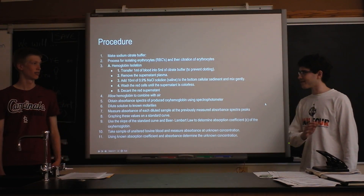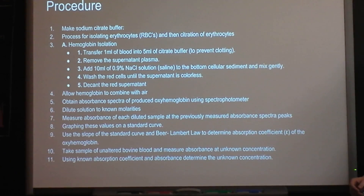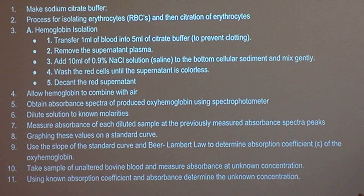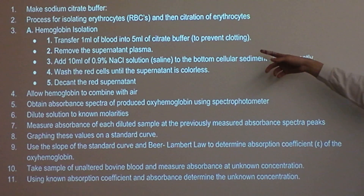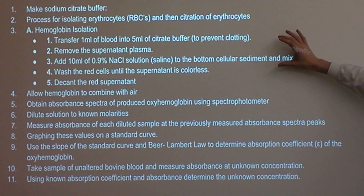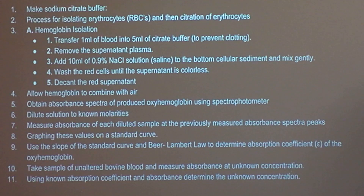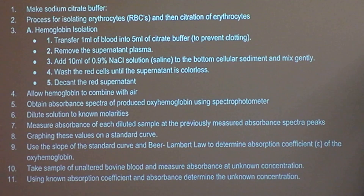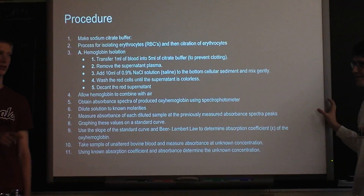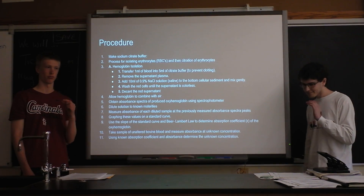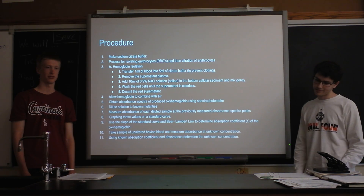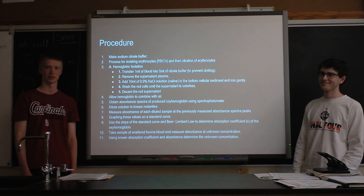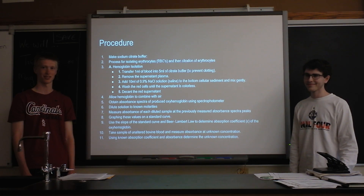The procedure was really long and involved a lot of chemistry. Because we wanted to make everything ourselves and see how feasible it was, we didn't just buy materials. I had to make a buffer to isolate the hemoglobin, which took a ridiculous amount of time. We had to allow the hemoglobin to combine with air to get the oxyhemoglobin complexes. We also used a centrifuge that spun the blood quickly to separate it into plasma with the red blood cells at the bottom. The centrifuge we found in the chemistry storage room was ancient and we had no idea how fast it was actually spinning.